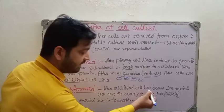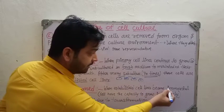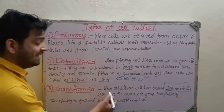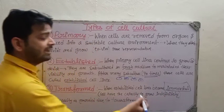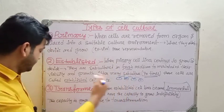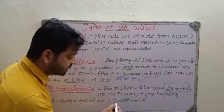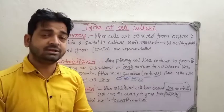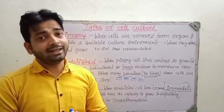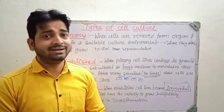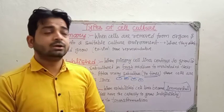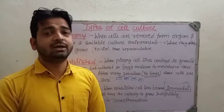The third type is transformed cell culture. As the name indicates, transformation occurs when established cell lines become immortal — a very important term here. Immortal means the cells have the capacity to grow indefinitely or infinitely. No matter how many times you subculture them, they keep on growing. This capacity arises due to transformation at the genetic or chromosomal level. The animal from which you originally isolated the organ or cell may die, but the isolated cells, provided with a suitable environment in the laboratory, will keep on growing indefinitely. These are the three types of cell culture.